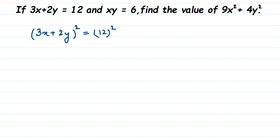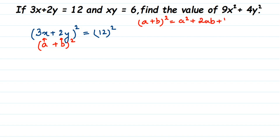12 squared is 144. On the left side we cannot open the brackets directly — it cannot simply become 9x squared plus 4y squared. We have to use the identity a plus b whole square. In place of a we put 3x and in place of b we put 2y. The identity is: a plus b whole square equals a squared plus 2ab plus b squared.